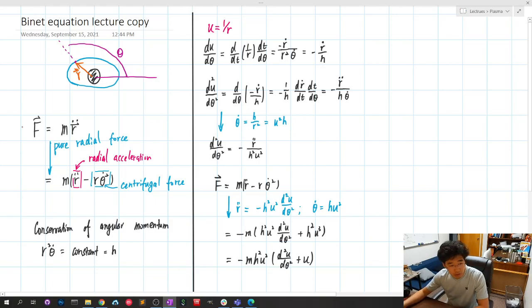So we start with, of course, second law of Newtonian mechanics and we know it's purely radial. Therefore we get the radial acceleration and centrifugal force.